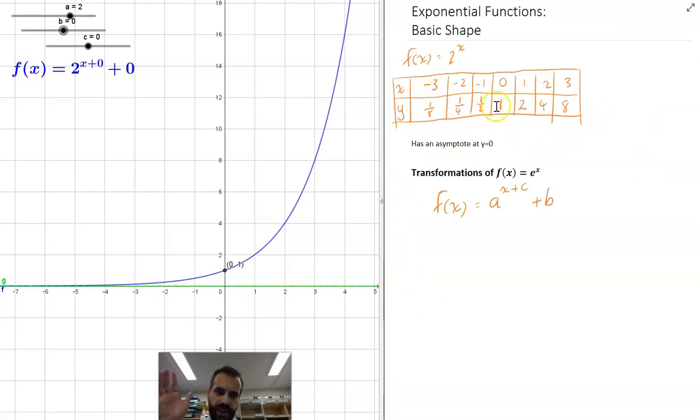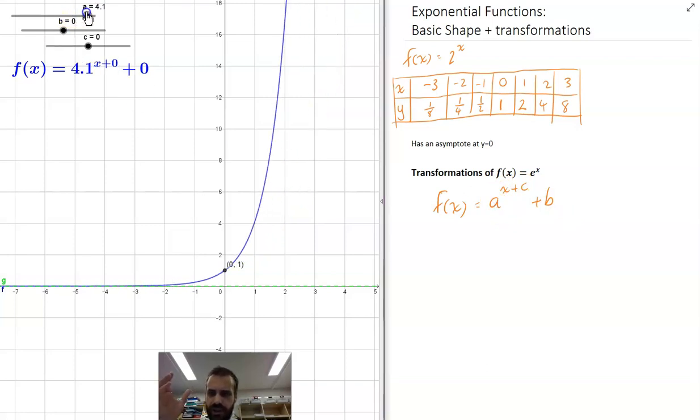Now that we have the basic shape covered of our exponential function, let's look at some transformations as well. So here we have a function a to the power of x plus c, plus b. Now we already know what the a value does. The a value just changes how steep that exponential function is.